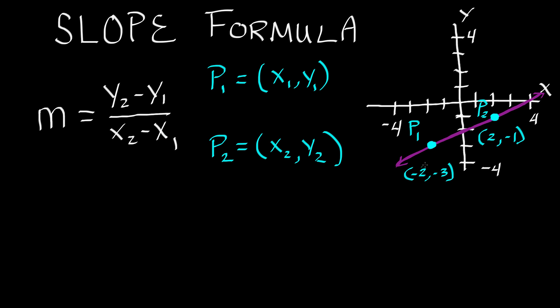So if this point, negative 2, negative 3, if that's p1, then we're going to put that up here for p1. We're going to put negative 2, negative 3. So now x1 has a value of negative 2, y1 has a value of negative 3. So p2 is the other point. It's 2, negative 1. So we'll go ahead and put 2, negative 1. And I'll put p1 up here for clarity and p2 down here. So x2 is equal to 2 now and y2 is equal to negative 1.